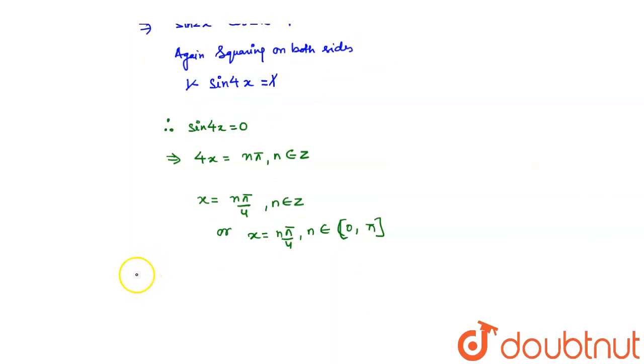We have 4 solutions, which are, therefore, x equals 0, 2, pi by 4. We have 5 solutions, rather, because 0 is also there.